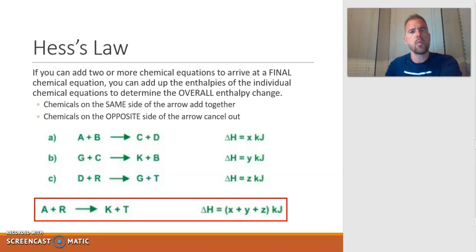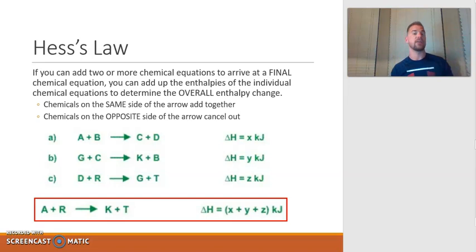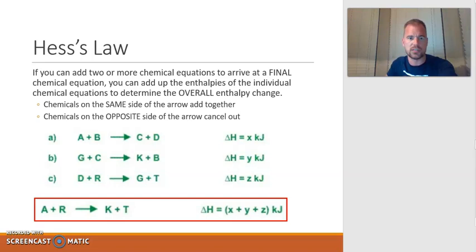But what does adding the equations together actually mean? When you're adding equations together, the chemicals that are on the same side of the arrow are going to add together. So if you have the same chemicals on the reactant side, they add together. If you have the same chemicals on the product side, they add together. And if you have chemicals on opposite sides of the arrow — reactant and product — they cancel each other out. So if I were to add up these three chemical equations, what would I end up having?